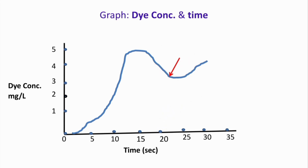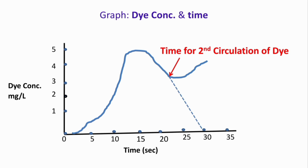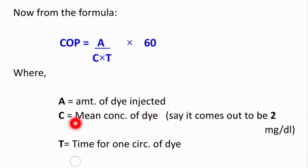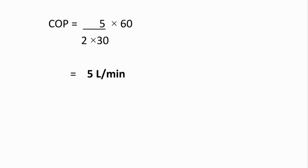We are concerned only with the first circulation of the dye. The descending part of the curve is extrapolated to the x-axis, which gives the time for one circulation — say 30 seconds. Using the formula cardiac output = A / (C × T) × 60, where A is the amount of dye injected (5 mg), C is the mean concentration (suppose 2 mg per deciliter), and T is the time for one circulation, we calculate a cardiac output of approximately 5 liters per minute.